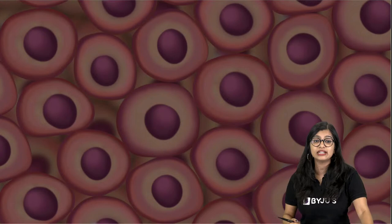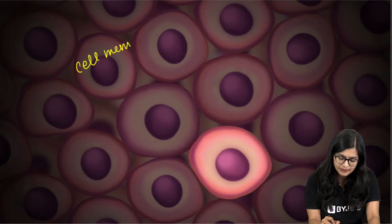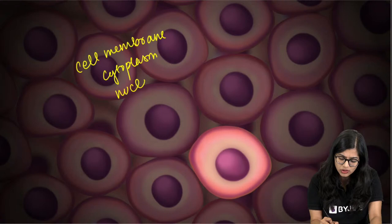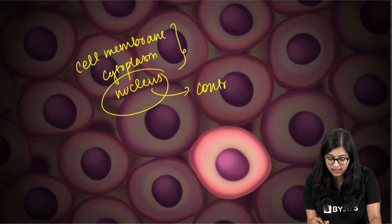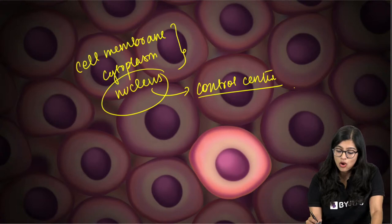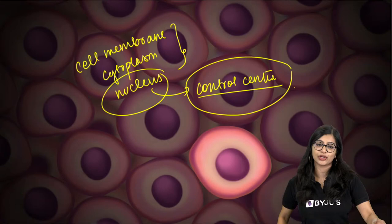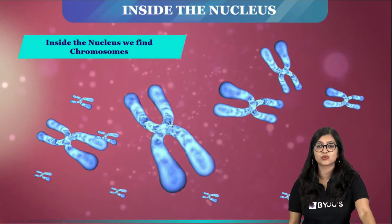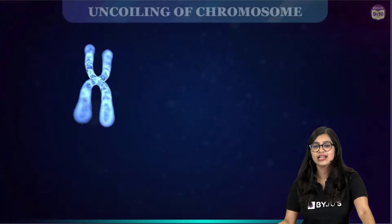We have understood that there is something called cell division, but there are a few basic things to understand first. In one single cell we know there is a cell membrane, cytoplasm, and a nucleus. The nucleus is called the control center of the cell. Why? Because inside the nucleus we find the genetic material — chromosomes or chromatin material. Chromosomes are formed by highly coiled genetic material.